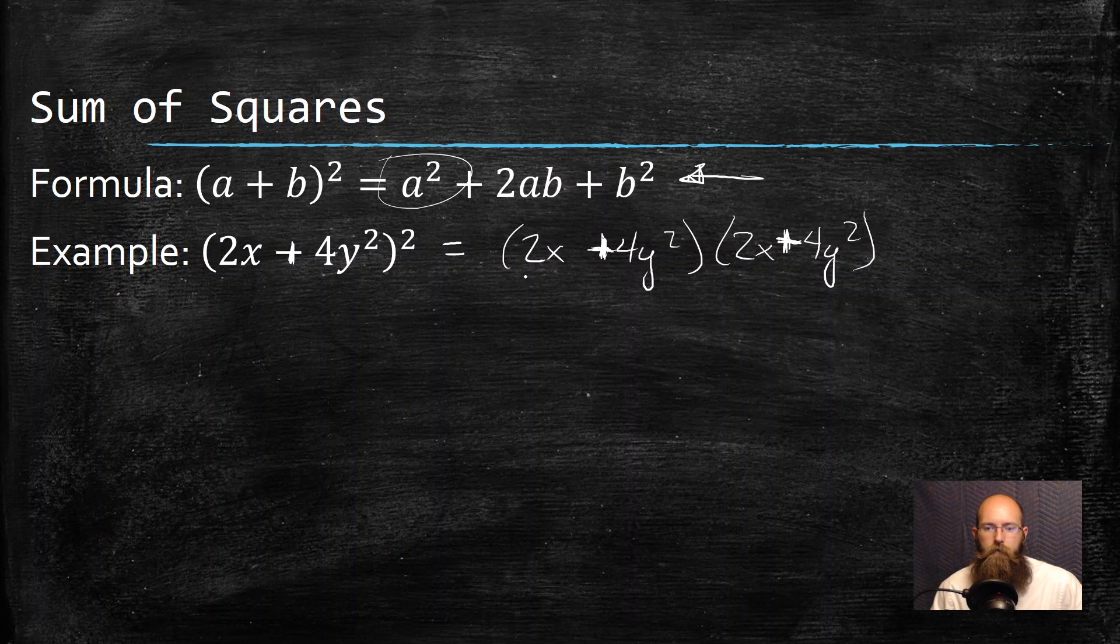Now I can square the first thing in my parentheses. So 2x all squared, double first thing times my second thing. And then I square my last thing. 4y² and that's all squared.